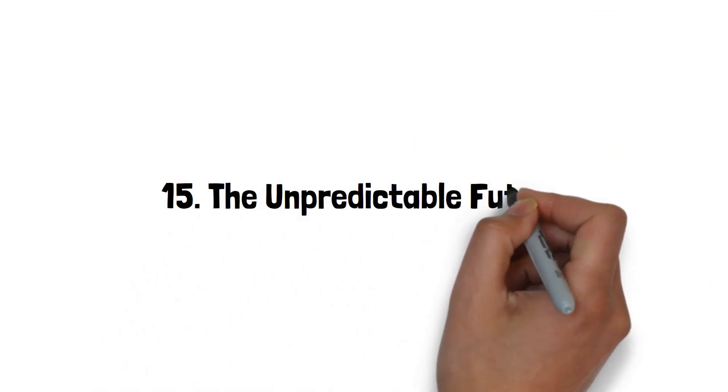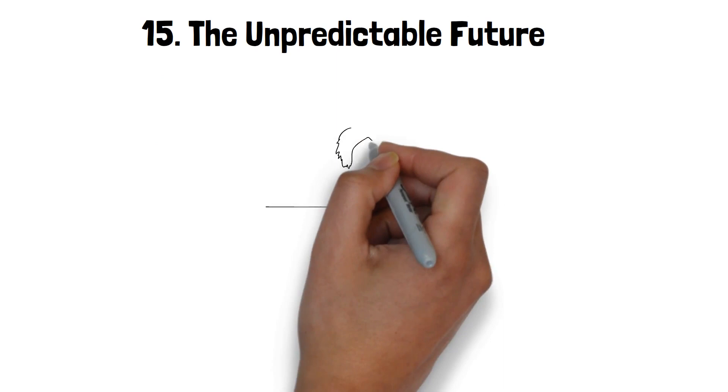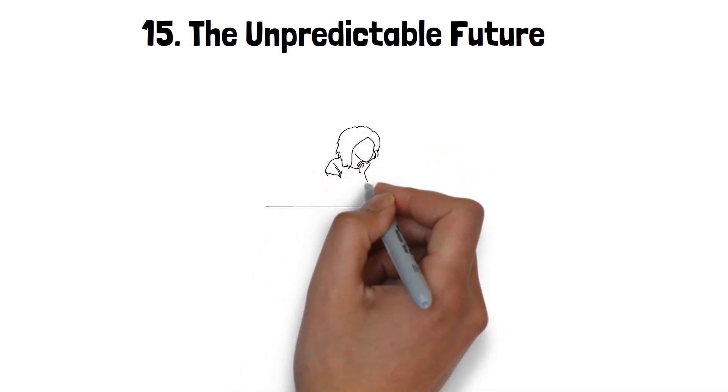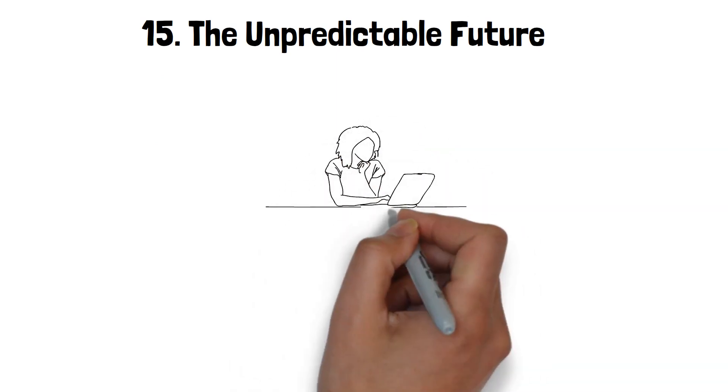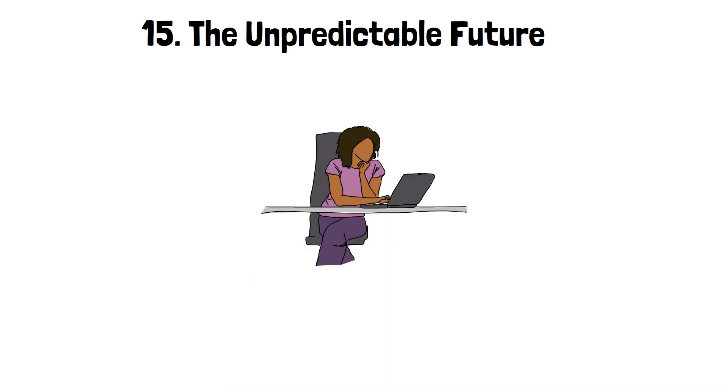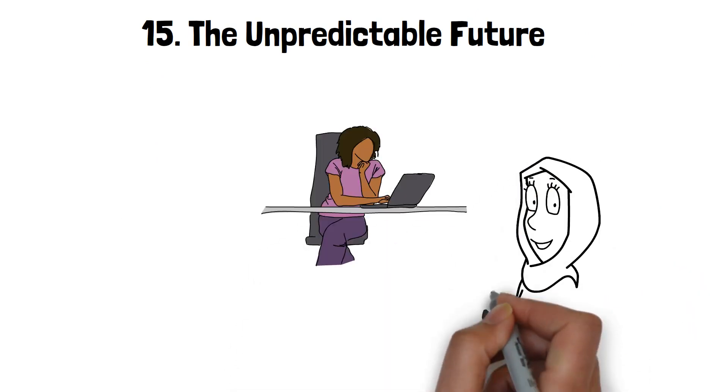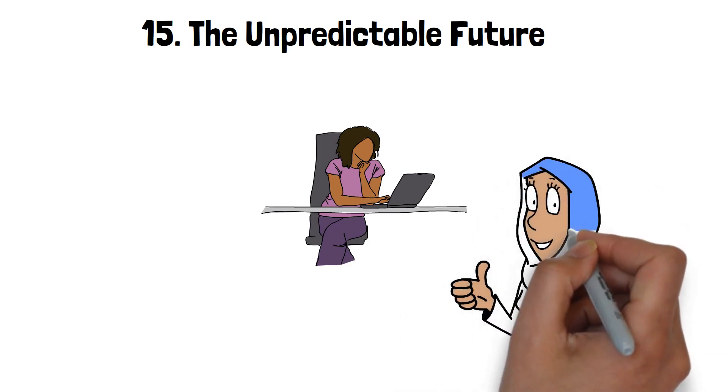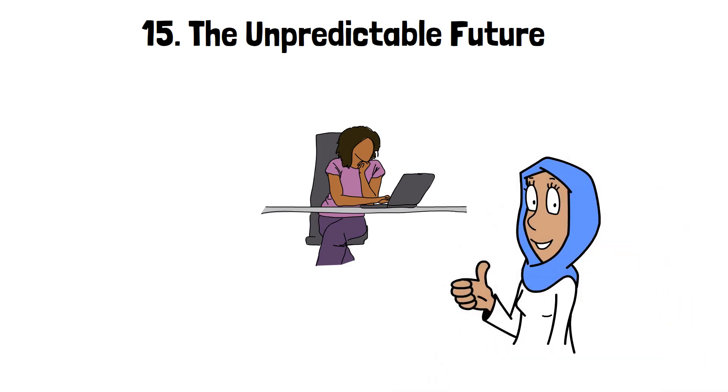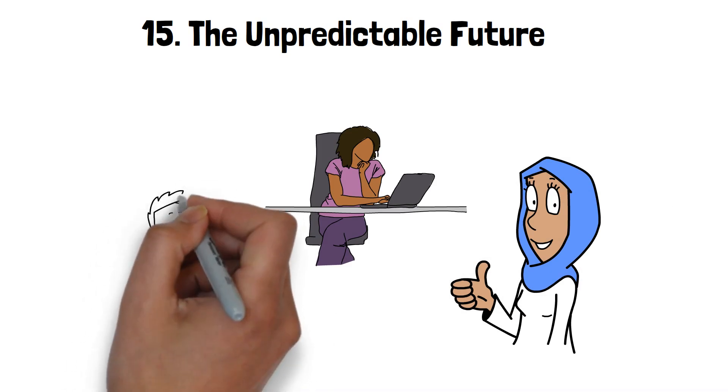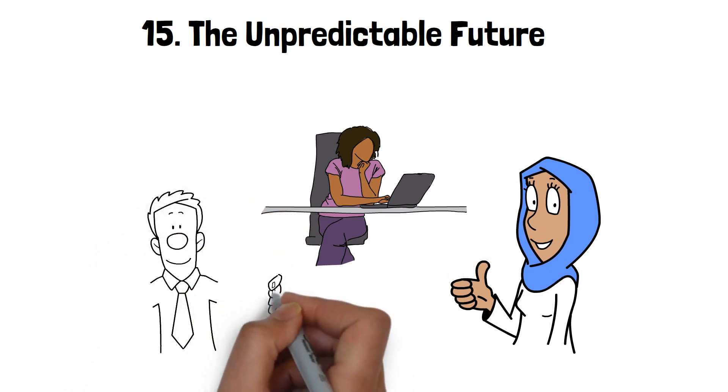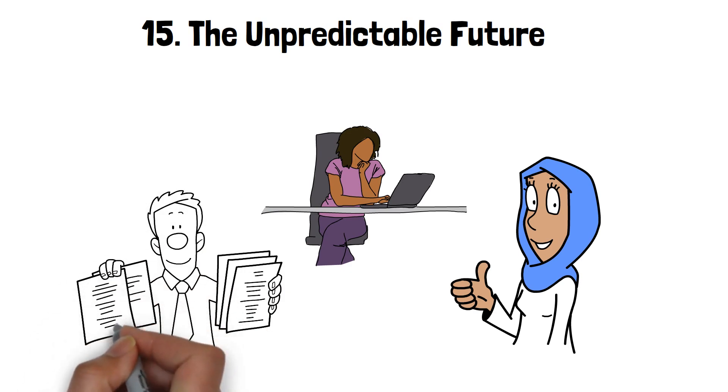15. The Unpredictable Future. One thing you can count on when living with a narcissistic wife is an unpredictable future. Their emotional instability, manipulative tactics, and sensitivity to criticism make it challenging to anticipate how your relationship will evolve. Understanding the emotional reactions and behaviors associated with narcissism is a crucial first step in dealing with the challenges ahead.